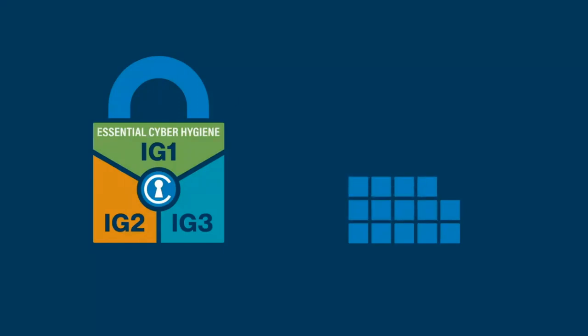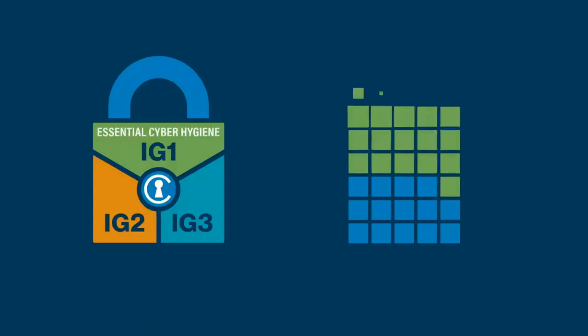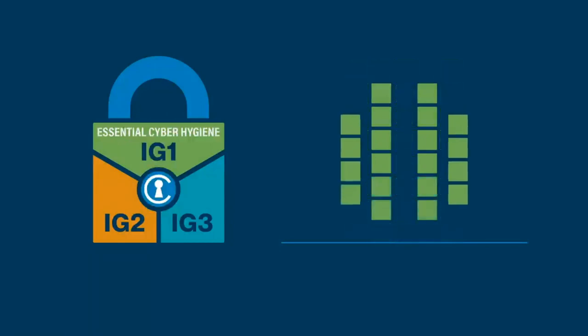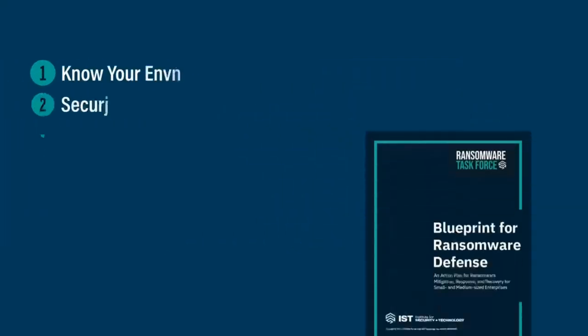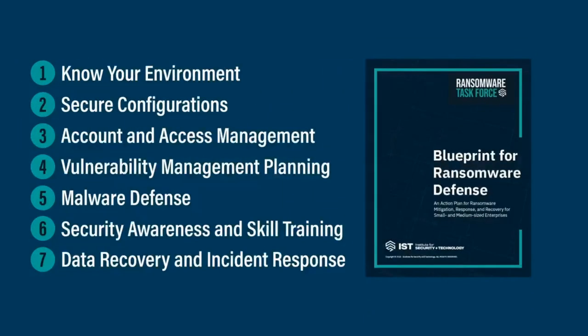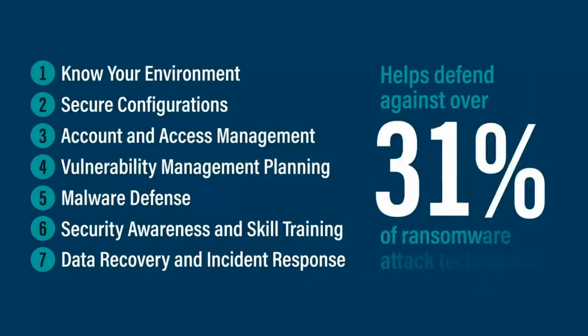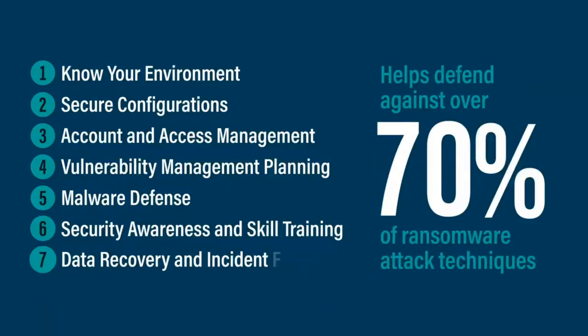The 14 foundational safeguards are the building blocks necessary to establish an enterprise's cybersecurity program, and they enable the implementation of actionable safeguards. The 26 actionable safeguards build on the foundational ones and are all about applying technical controls to protect an enterprise's environment and defend against ransomware and other general non-targeted cyber attacks. Focusing on seven major areas, the blueprint helps defend against over 70% of the attack techniques associated with ransomware.